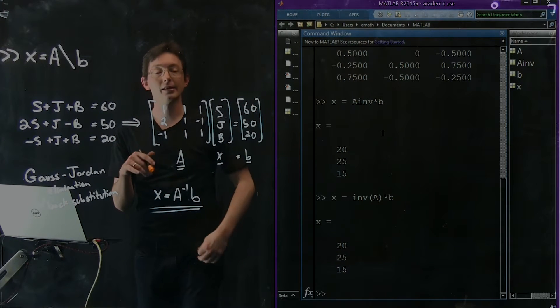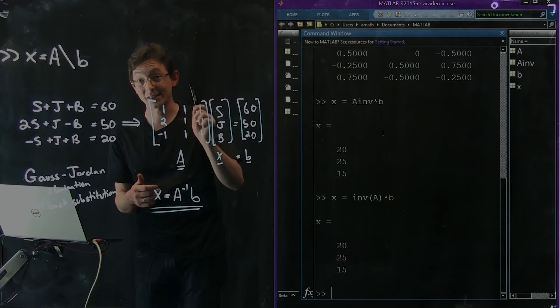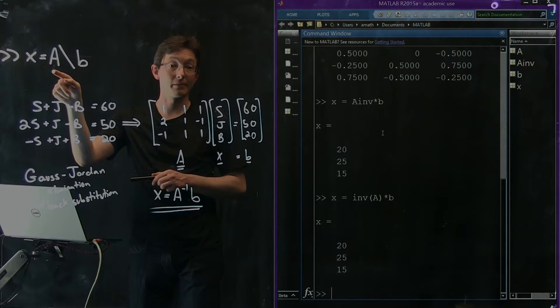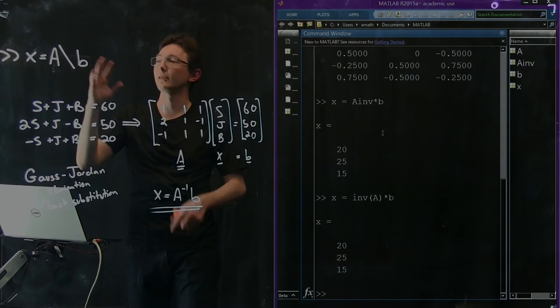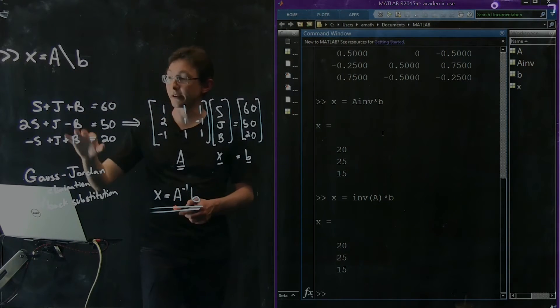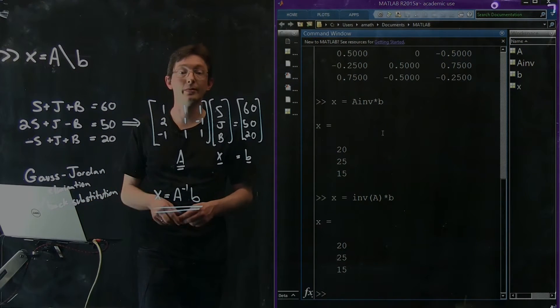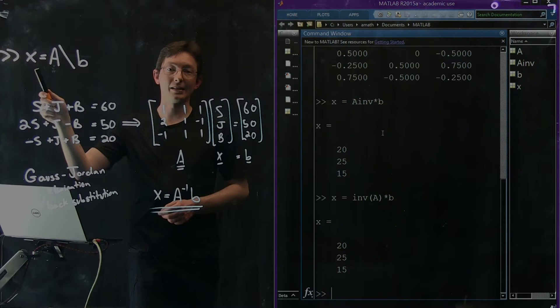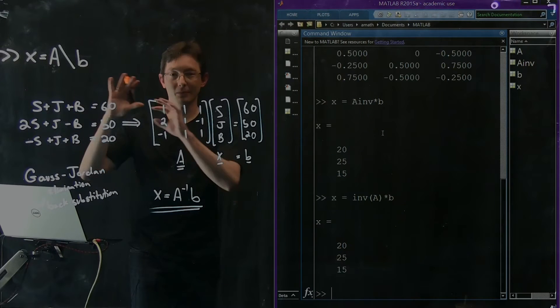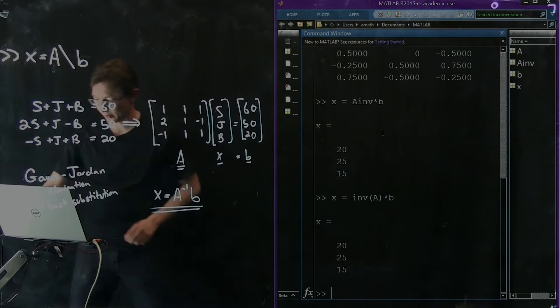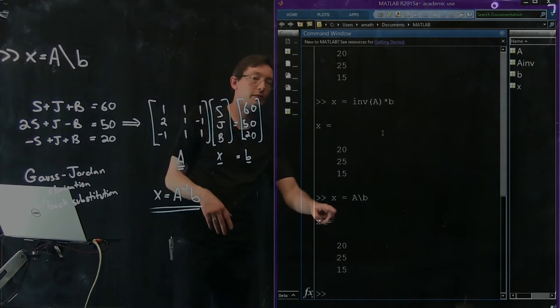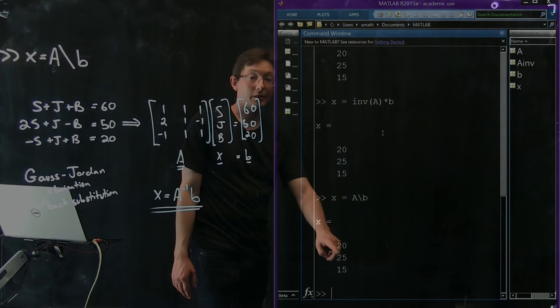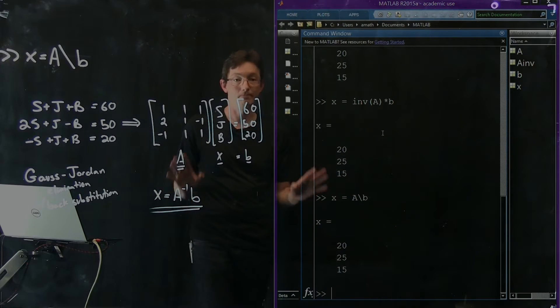It's going to use the fastest method that it has. It has dozens of methods to solve this equation, and it's going to find the fastest one depending on your particular A matrix. For some A matrices, if it's symmetric, diagonal, sparse, or mostly zeros, MATLAB has special tools that are faster than Gauss-Jordan elimination. This is like x equals inverse of A times B, except it's the fastest version MATLAB can come up with. If I type x equals A backslash B, I should get the same correct solution. It also gives me the correct values of Sally, John, and Bob's age.